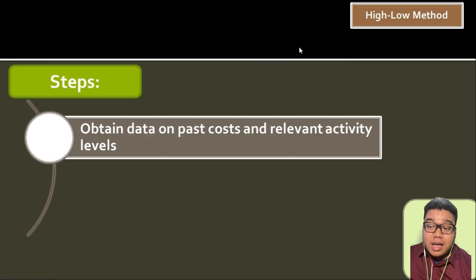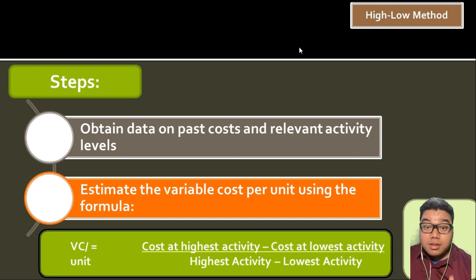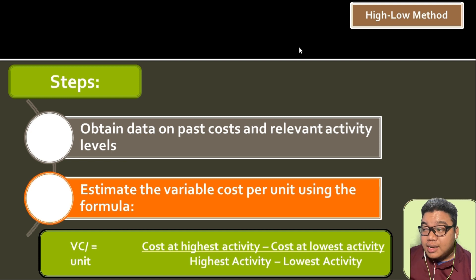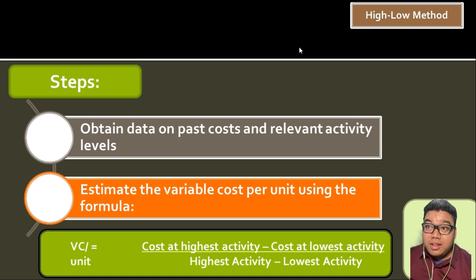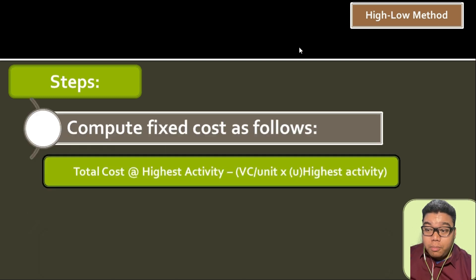Next we have the High-Low Method. We obtain data based on past observations of cost within the relevant activity levels, then estimate the variable cost per unit using this formula: cost at highest activity minus cost at lowest activity, divided by highest activity minus lowest activity. This analyzes the incremental cost incurred for a certain number of units — the difference in total cost between the highest and lowest activity levels — then we compute fixed costs.